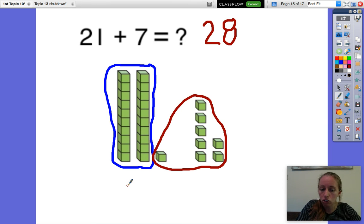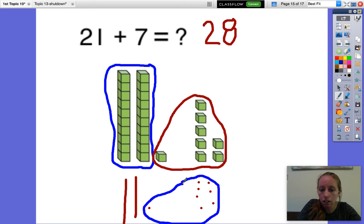Now I could do the same thing by just drawing lines, right, and dots. Here's 21. And then here's 2, 3, 4, 5, 6, 7. Okay, and I could do the same thing and group like numbers. Group our ones together. And then group our tens. And I would see that I have 2 tens, which is 20. And then I have 8 ones, which is 8. And together they make 28.